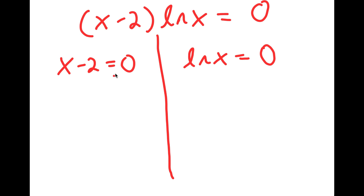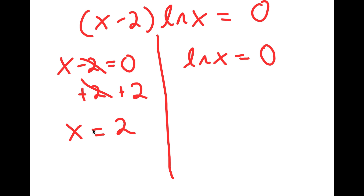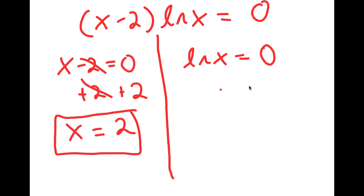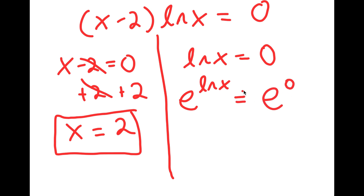For x minus 2 equals 0, this is a simple equation. All I have to do is add 2 on both sides, and I get x is equal to 2. For ln x equals 0, I'm going to take e to the power of both sides. I get e to the power of ln x is equal to e to the power of 0. Since e and ln x cancel out, I'm left with x is equal to e to the power of 0, which is 1.